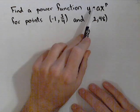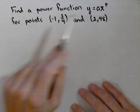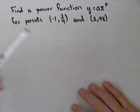So we want to find a power function of the form y equals a x to the p, going through the points (-1, 3/4) and (2, 48).